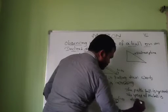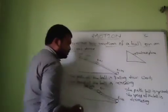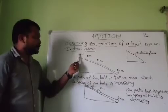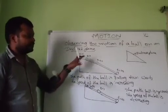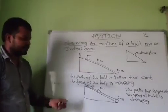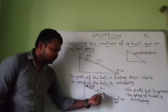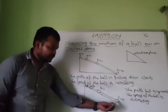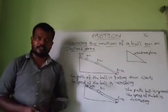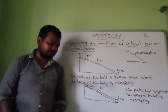So we observe two points here about the motion of the ball on an inclined plane. From the top, without applying any force, if you leave it, the speed of the ball increases and it falls downwards. And if you push the ball from the bottom of the plane to the top of the plane, the speed is decreasing and it is moving upwards. This is about the motion of the ball on an inclined plane. Thank you.